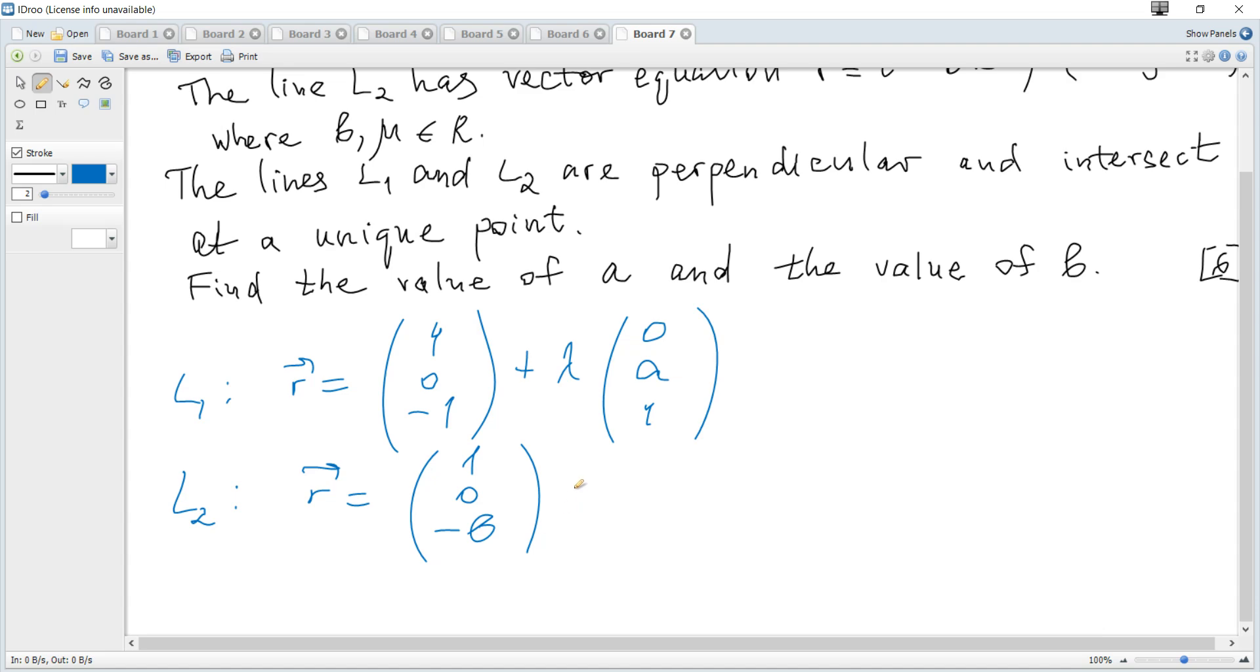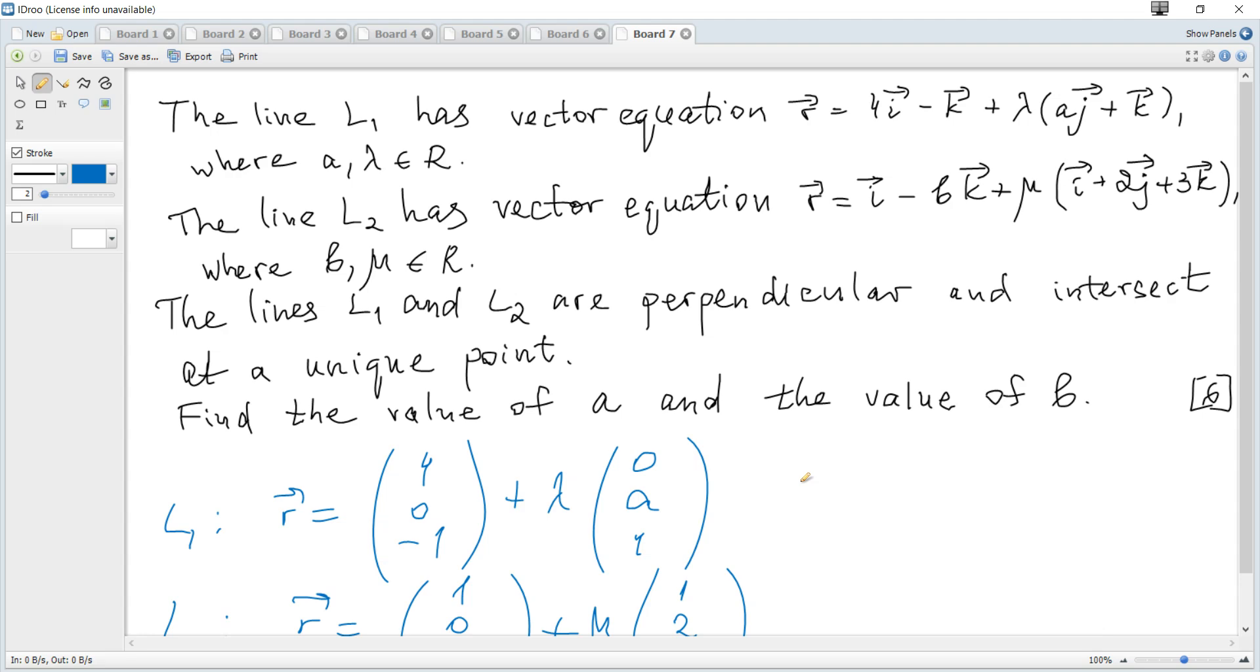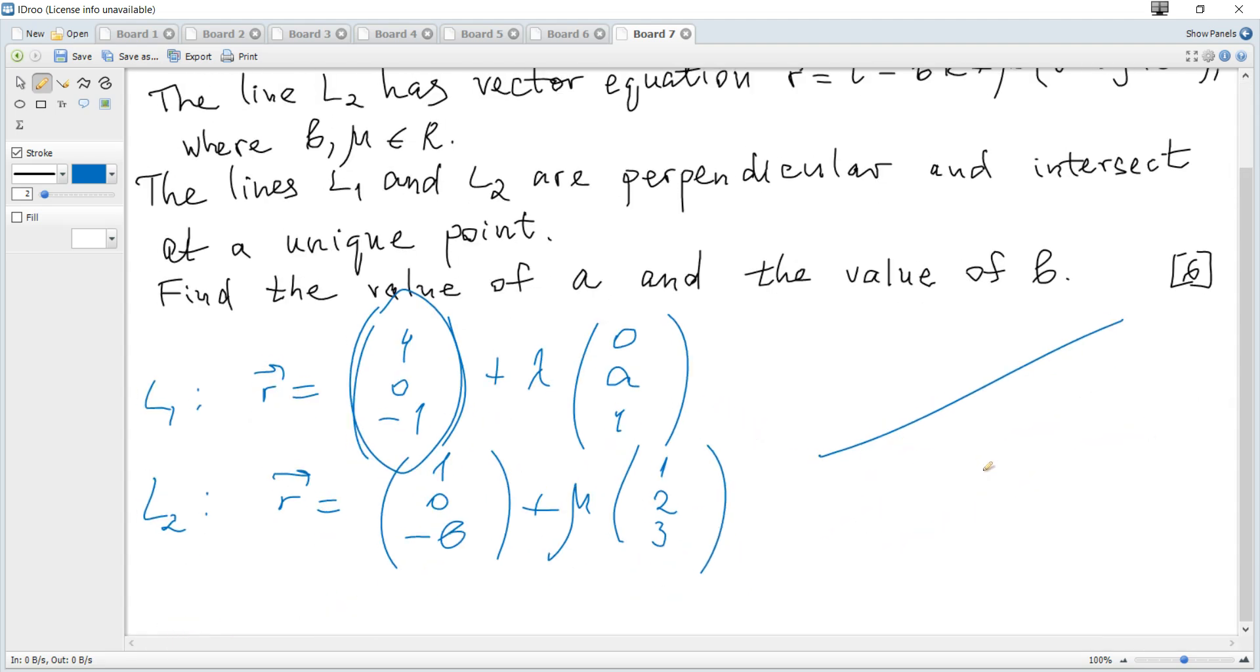And for L2, r equals (1, 0, -B) plus mu (1, 2, 3). This is a position vector of some point on the line and its direction vector.